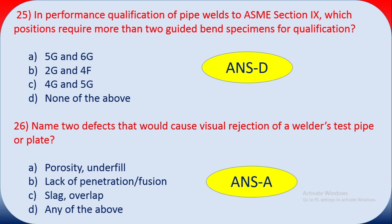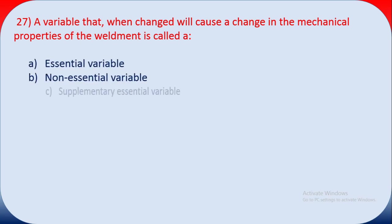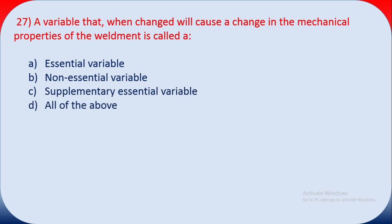Question twenty-seven: a variable that when changed will cause a change in the mechanical properties of the weldment is called what? If changing it affects mechanical properties, it is an essential variable. The answer is A — essential variable.